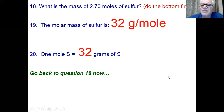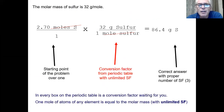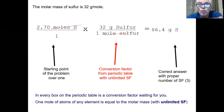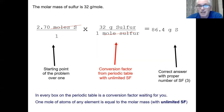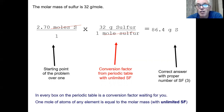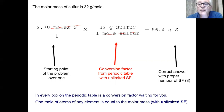Starting with 2.70 moles of sulfur over 1, we use the conversion factor: 32 grams of sulfur per 1 mole of sulfur in the denominator to cancel moles. Multiply across: 2.70 × 32 = 86.4 grams of sulfur. The molar mass from the periodic table has unlimited significant figures, so with three significant figures in the given value, the answer is 86.4 grams of sulfur.